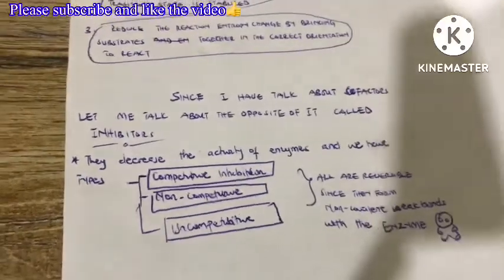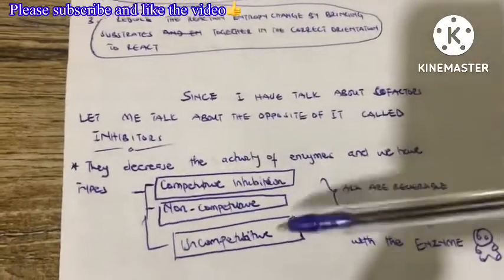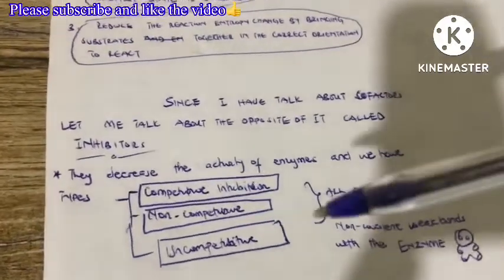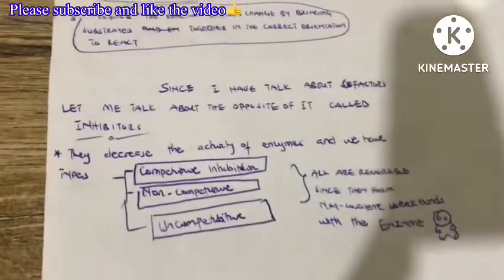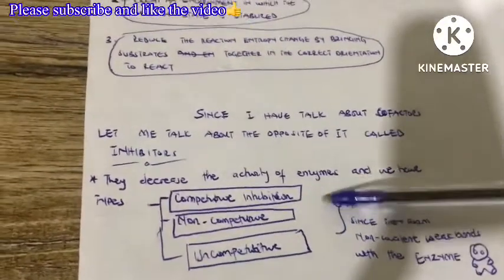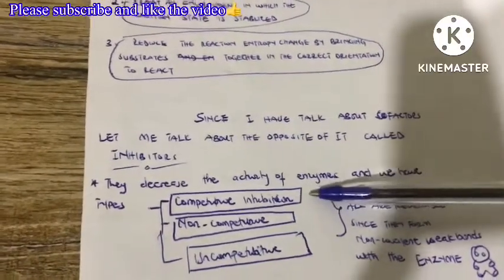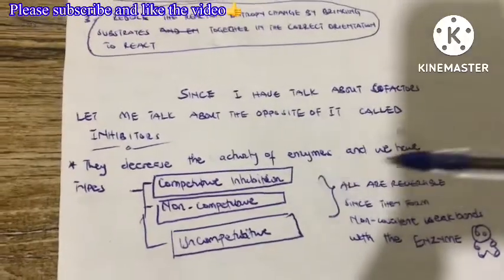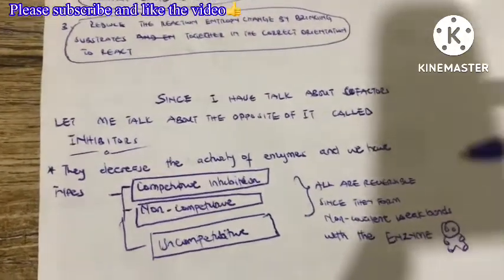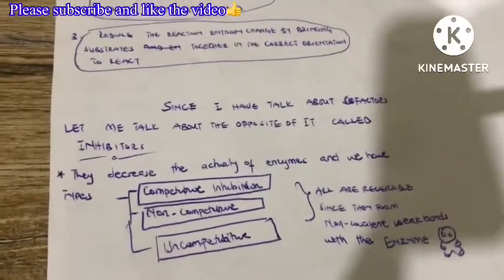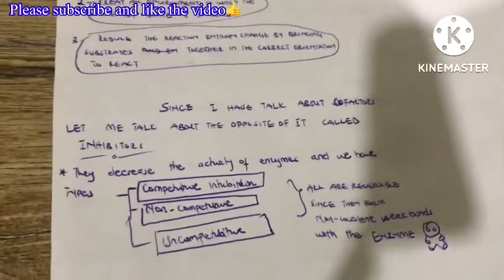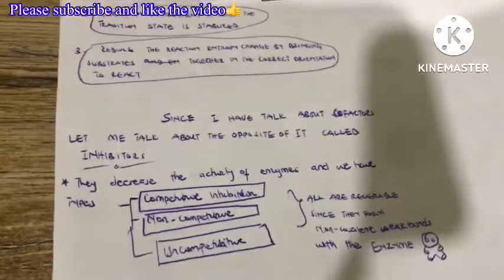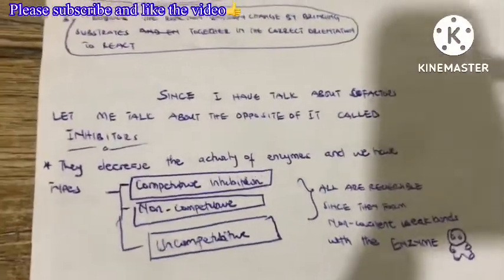We call it competitive inhibition because these inhibitors actually look like the substrates — they are analogues of the substrates. Because they look like the substrate, they compete with the substrate for the active sites on the enzyme. This competitive inhibition can be overcome when you increase the concentration of the substrate, allowing the substrate to remove the inhibitor and bind to the active site instead. When the concentration of the substrate is low, the inhibitor wins and binds to the active site.